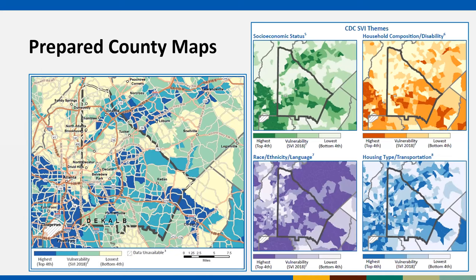We also provide prepared county maps for every U.S. county, which display social vulnerability at the census tract level for counties of interest. Our partners value these maps because they can take a quick glance and get a good idea of the varying patterns of social vulnerability within their jurisdictions. Here's an example for DeKalb County, Georgia — we see the overall social vulnerability map on the left and maps of the four themes on the right. Some tracts are highly vulnerable on all four themes, while others may be highly vulnerable on only one or have low vulnerability overall.